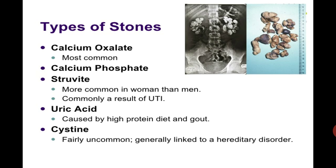Now we will see the types of kidney stones. The major types include calcium oxalate, caused by hyperoxaluria, which is a high level of oxalate in the blood — this is the most common type. Then we have calcium phosphate stones, caused by hypercalcemia, which is a high level of calcium in the blood. Next are struvite stones, which are more common in women than men.